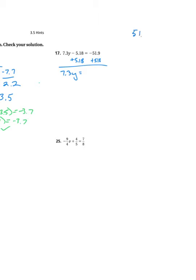so that means I'm really subtracting. 51.90 minus 5.18, and I'm going to borrow here. 10 minus 8 is 2, 7, 51 minus 5 is 46. So my answer here is negative 46.72. 7.3y equals negative 46.72.